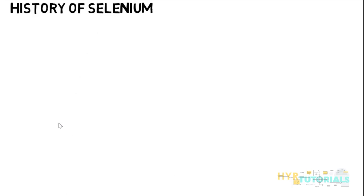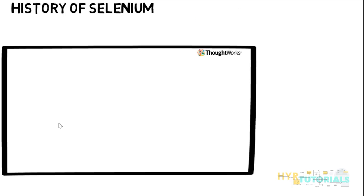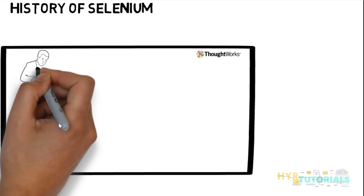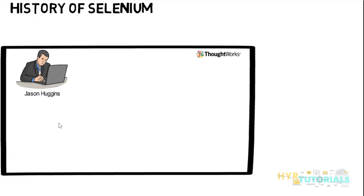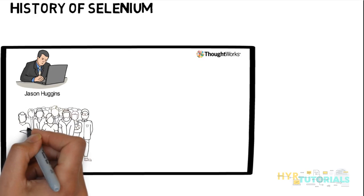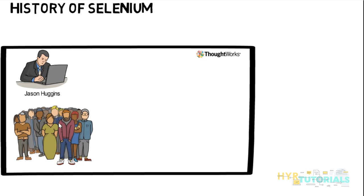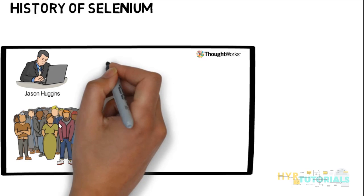The development of Selenium started at a company called ThoughtWorks. There was a guy called Jason Huggins who started developing Selenium. It started as an internal automation tool — it was not intended to be a big open source tool. It was developed to automate the applications they had at ThoughtWorks. Later, other developers and testers liked the concept and slowly started supporting Jason Huggins.